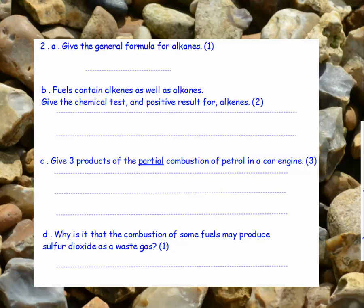Give the general formula for alkanes. Part B: fuels contain alkenes as well as alkanes. Give the chemical test and the positive result for alkenes. Part C: give three products of the partial combustion of petrol in a car engine. Part D: why is it that the combustion of some fuels may produce sulphur dioxide as a waste gas?